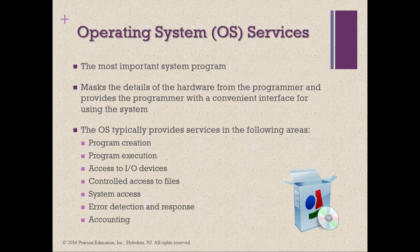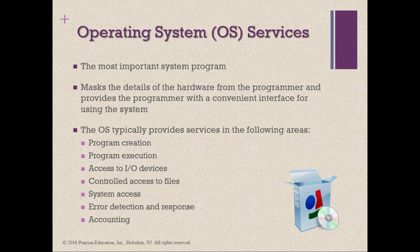Next is program execution. A number of steps need to be performed to execute a program: instructions and data must be loaded into main memory, I/O devices and files must be initialized, and other resources must be prepared — the OS handles all of this. For the user, program execution is simply clicking the icon of an application, but in the background, the OS is managing all those steps.